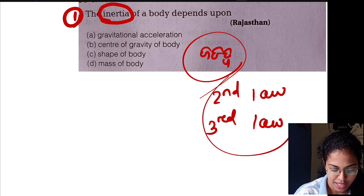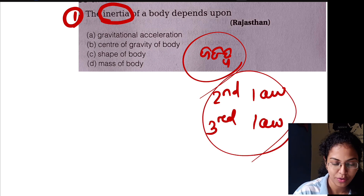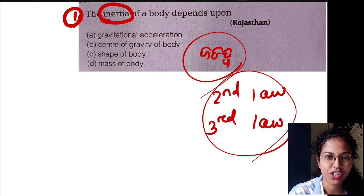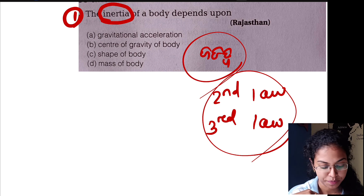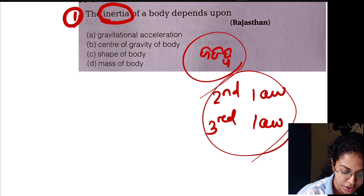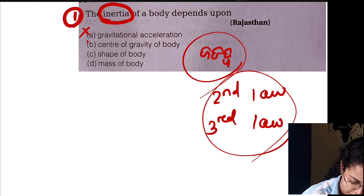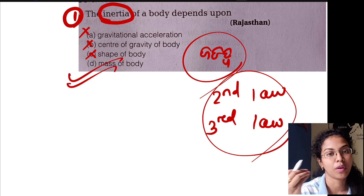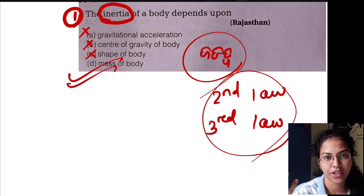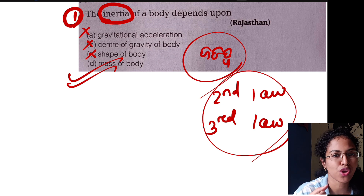The 1st law you can say is the law of inertia. The inertia depends on the mass. Mass and center of gravity — the inertia of a body lies in the mass.